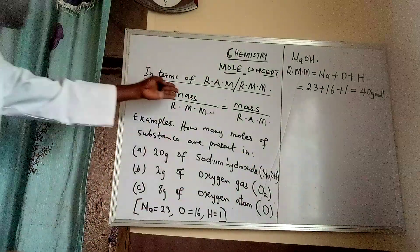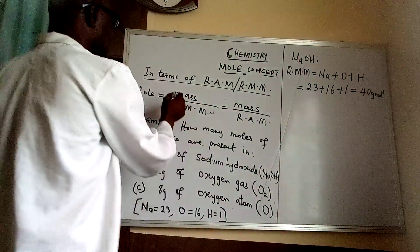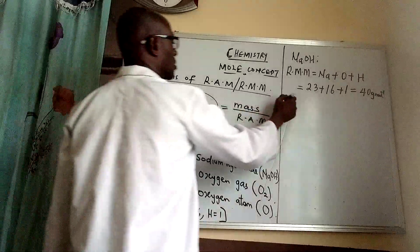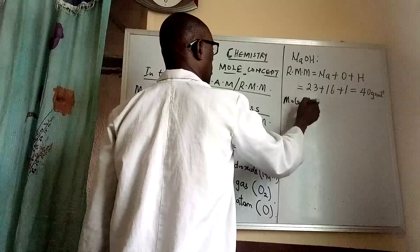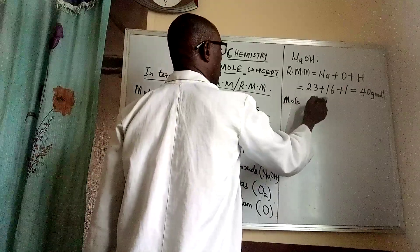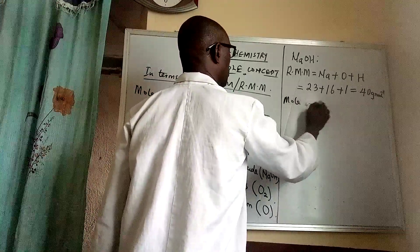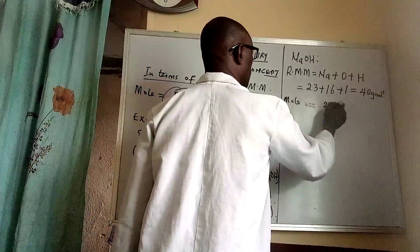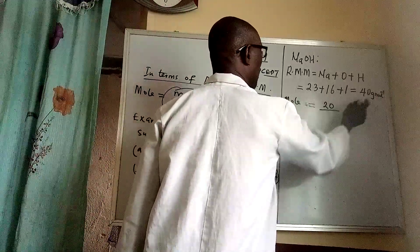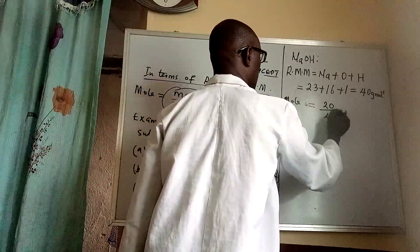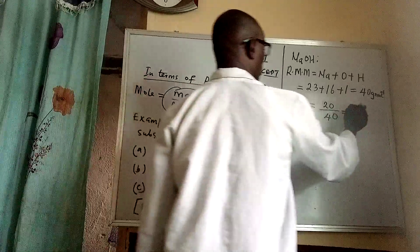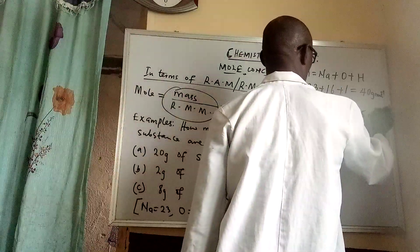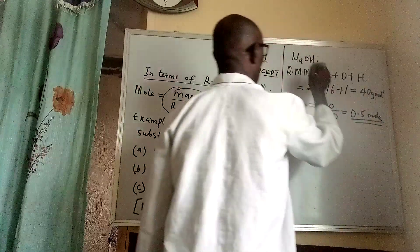Recalling the formula: mole = mass / relative molecular mass. The given mass is 20 grams divided by 40, and that gives 0.5 mole. That is the solution for question (a).